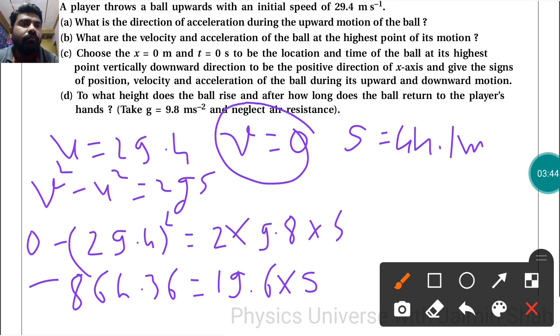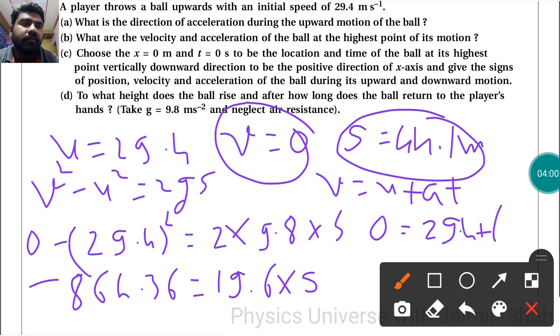So v = 0, so we have both values. Now how long? So time we have to find. First equation of motion: v = u + at.